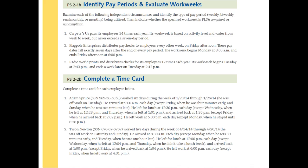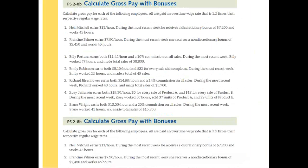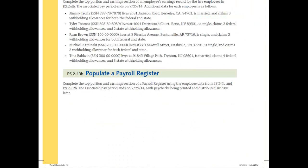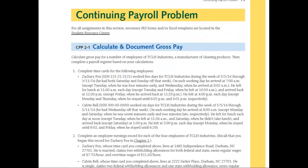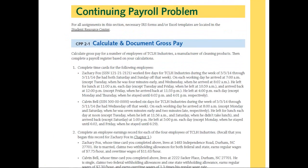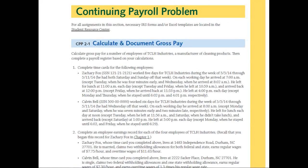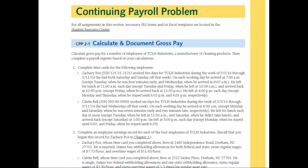Moving forward, the next section is our continuing payroll problem. Similar to what we did in the chapter opener following Lucky Tides Apparel, we've created TCLH Industries and follow that company from chapters one through six. We ask the student to complete essentially all the steps introduced in chapter two, but relative to this company they follow throughout. Again, they get to see that one company from beginning to end with regard to the payroll cycle.